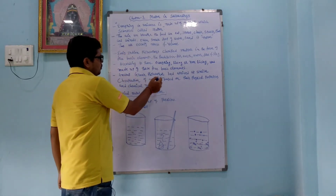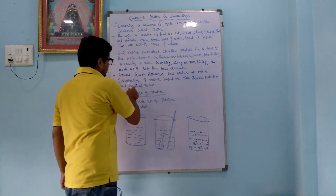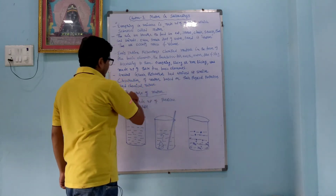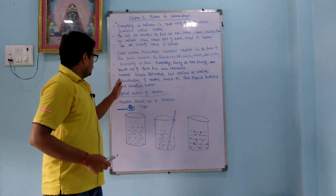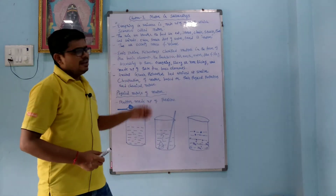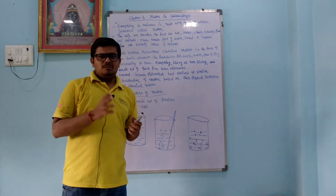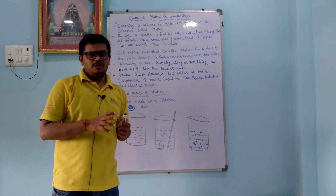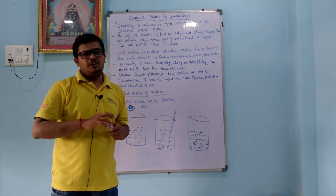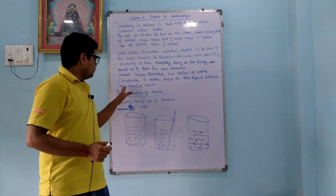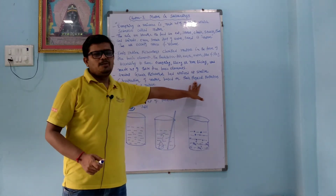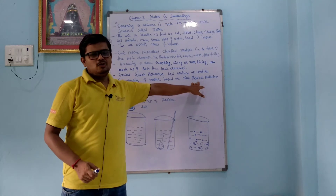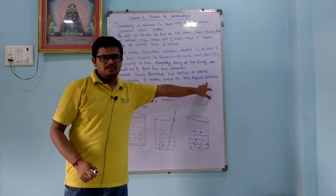Ancient Greek philosophers arrived at a similar classification of matter based on physical properties and chemical nature. They divided matter into categories — physically into solid, liquid, gas, and plasma; and chemically by nature as well.